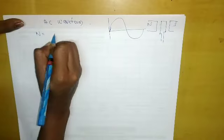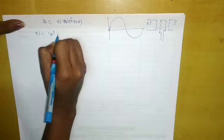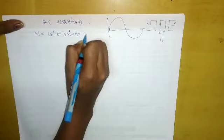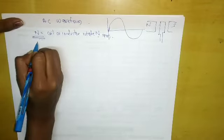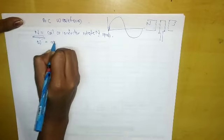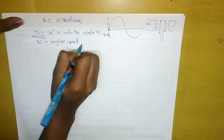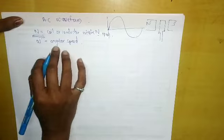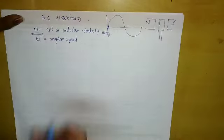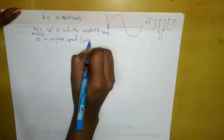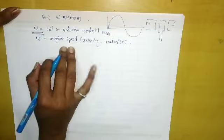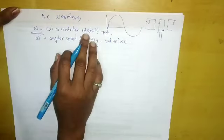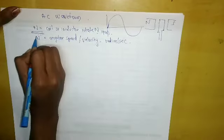Let N equal the speed at which the coil or conductor rotates, in RPM. Omega (ω) is the angular speed or angular velocity, given in radians per second. N is the rotation given in RPM, and angular speed is given as omega.